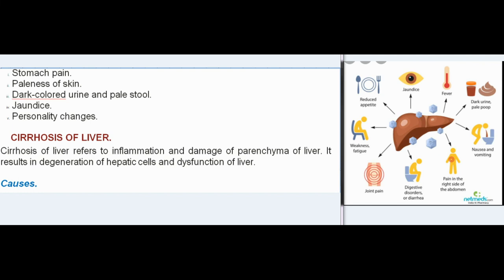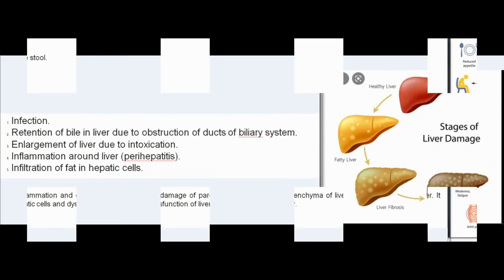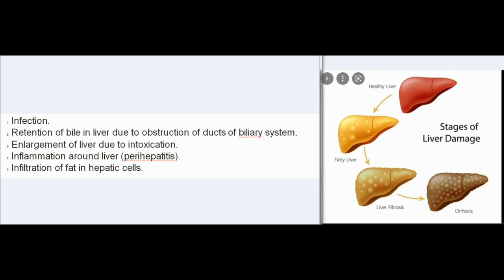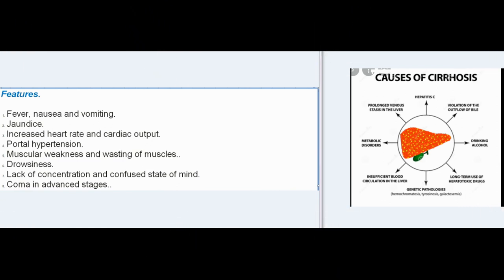Cirrhosis of the liver refers to inflammation and damage of the parenchyma of the liver, resulting in degeneration of hepatic cells and dysfunction of the liver. Causes include infection, retention of bile due to obstruction of biliary ducts, enlargement of liver due to intoxication, inflammation around the liver (perihepatitis), and infiltration of fat in hepatic cells. Features include fever, nausea, vomiting, jaundice, increased heart rate and cardiac output, portal hypertension, muscular weakness, wasting of muscles, drowsiness, lack of concentration, confused state of mind, and coma in advanced stages.